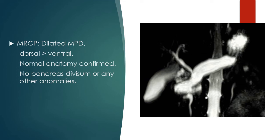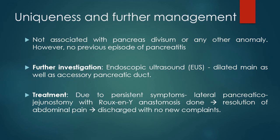Since the patient was symptomatic and ductal dilatation was significant, MRCP was performed. We hoped there might be some congenital anomaly causing the symptoms, but to our surprise, MRCP revealed perfectly normal ductal anatomy. Due to persistent symptoms, a decision for surgical intervention was taken. Lateral pancreatic jejunostomy with Roux-en-Y anastomosis was done, which the patient tolerated well, with resolution of abdominal pain. This was a unique case of Santorini Cele along with Wirsungocele, not associated with any anatomic anomaly or previous pancreatitis, in which the patient benefited from surgical management.